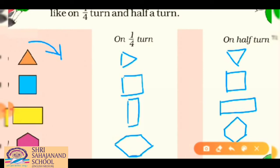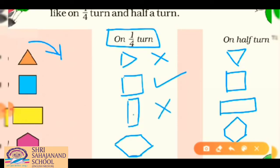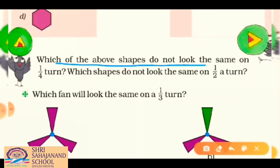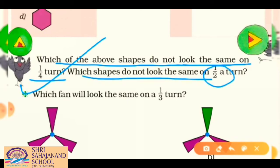In one fourth turn: the triangle does not look the same, the square looks the same, the rectangle does not look the same, and the hexagon does not look the same. In half turn: the triangle does not look the same, the square looks the same, the rectangle looks the same, and the hexagon looks the same. Only the triangle does not look the same in half turn.